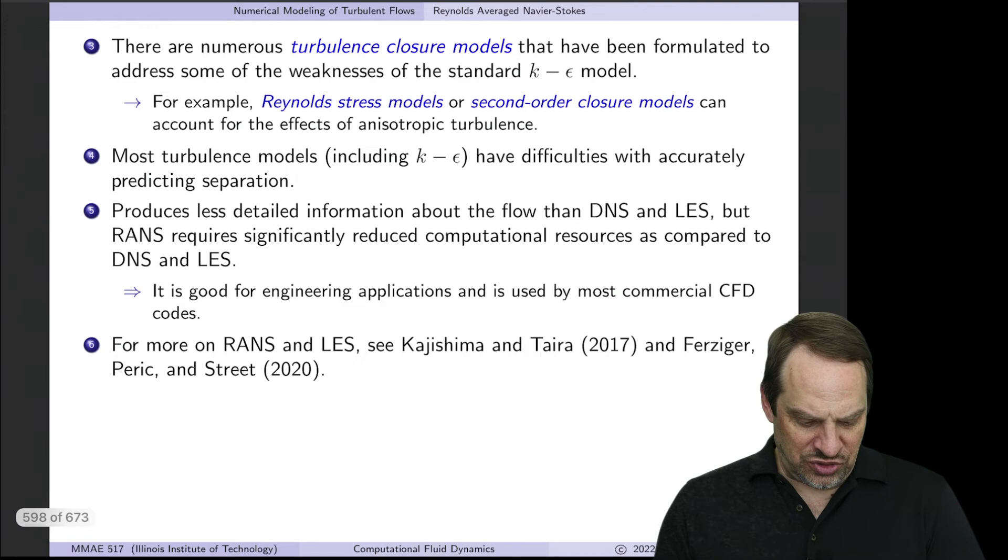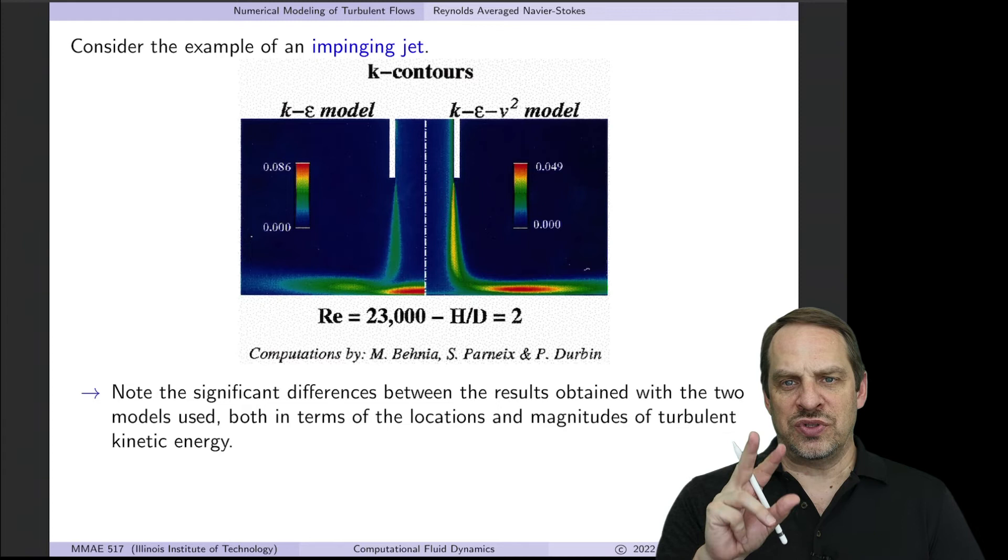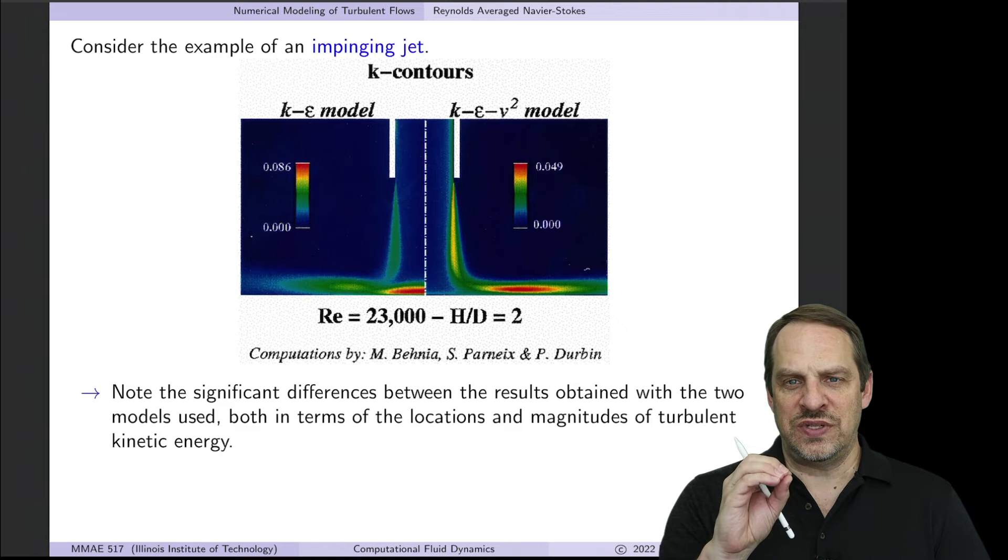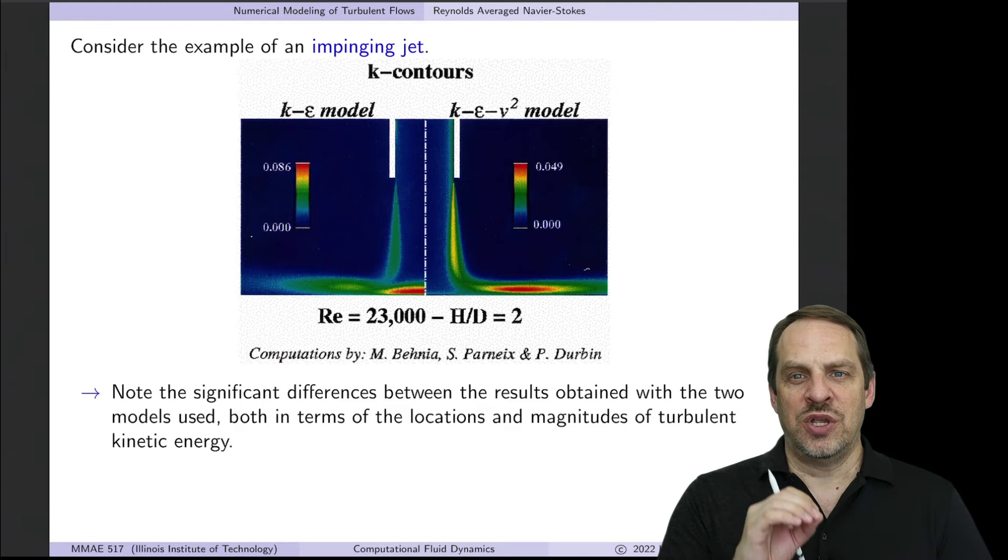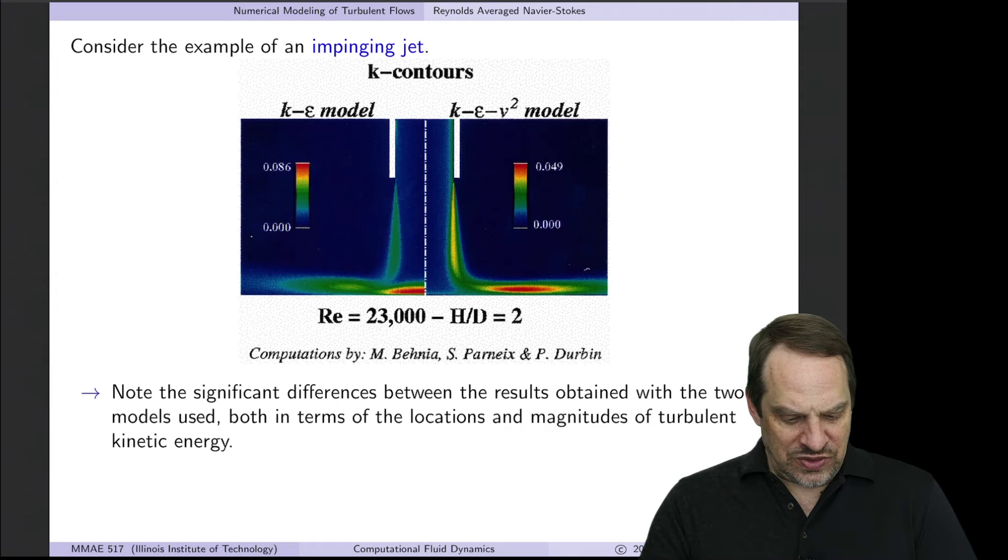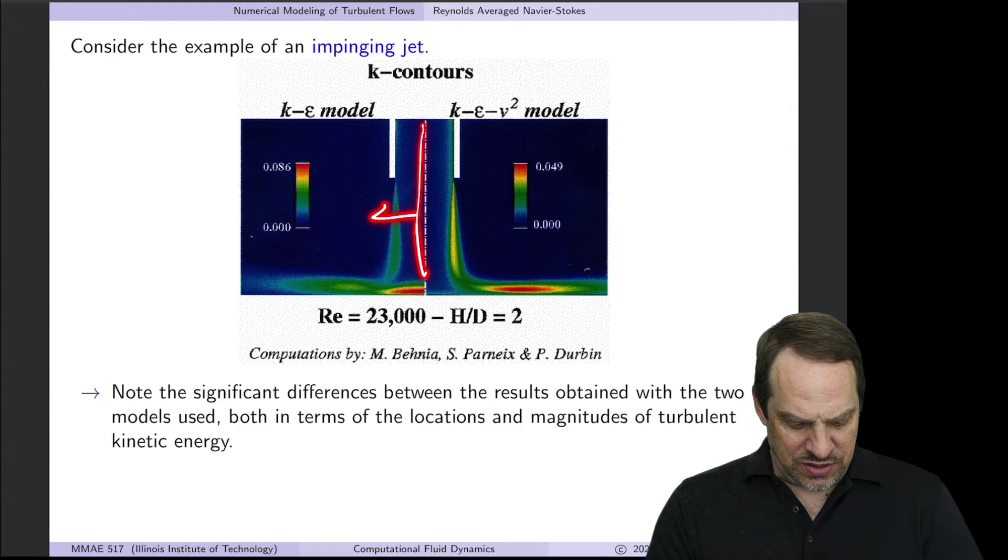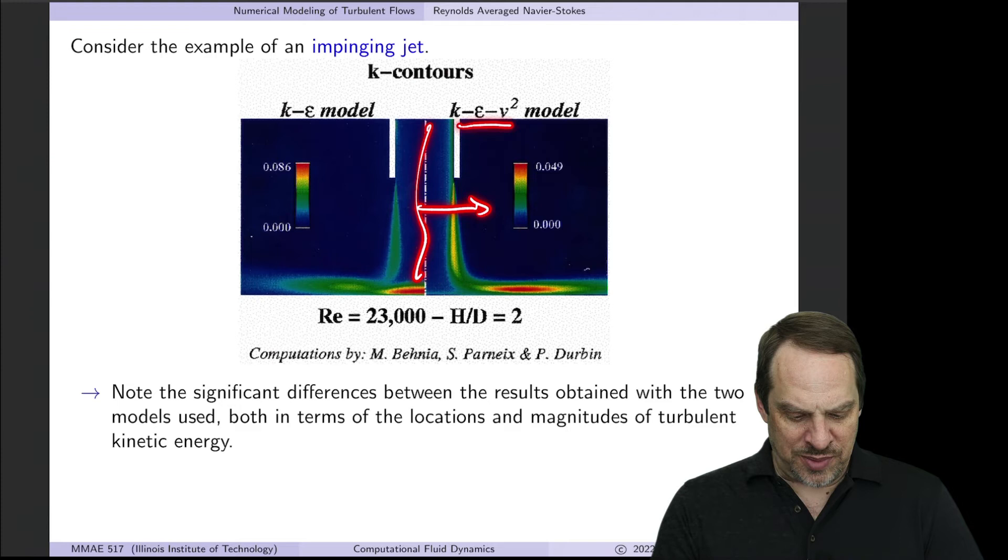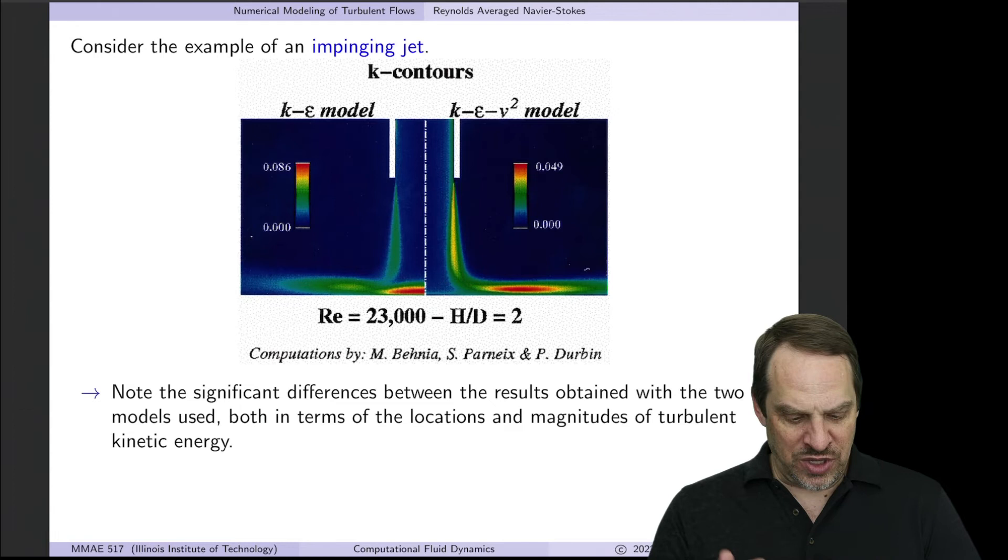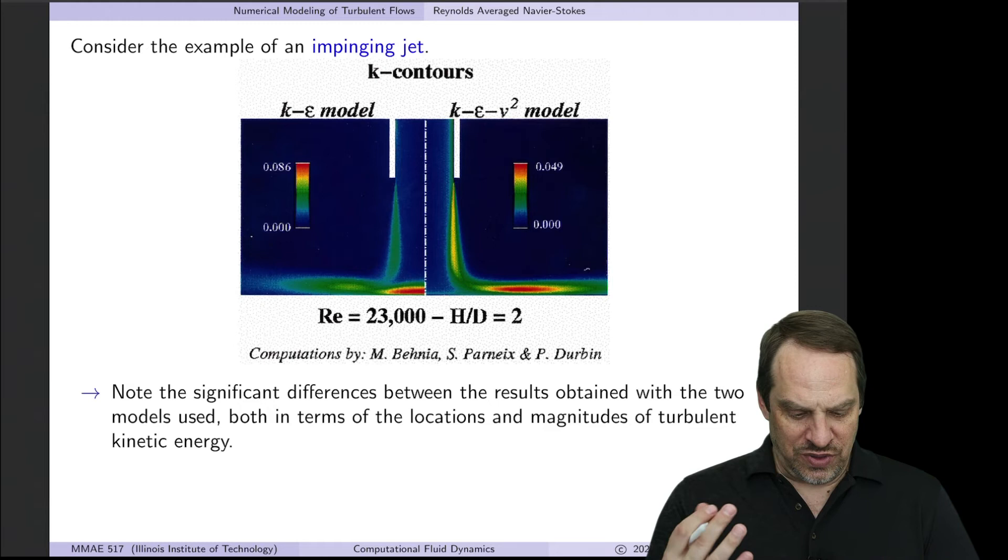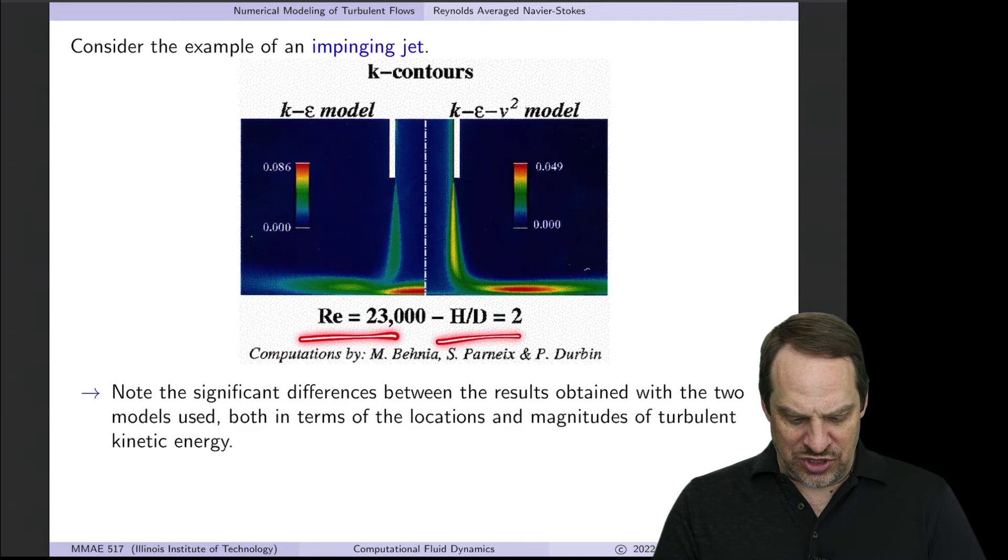I want to show you an example, a very simple flow, and I'm going to show you the results for two different turbulence models in a RANS context. I want you to see not only how different the solutions are quantitatively, the numbers, but also qualitatively, the overall flow behavior. This is an impinging jet. The fluid is impinging against this horizontal surface at the bottom of the domain. On the left is a traditional k-epsilon model, and on the right is a k-epsilon nu squared model. Same flow, same parameters, everything is exactly the same.